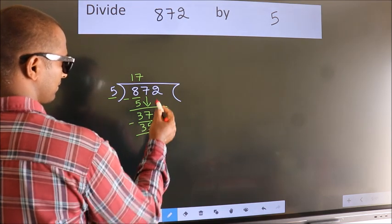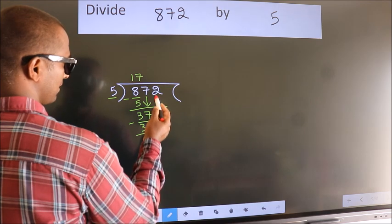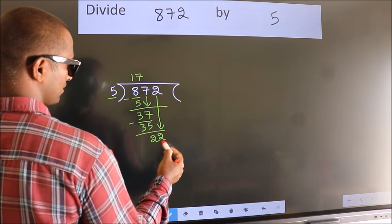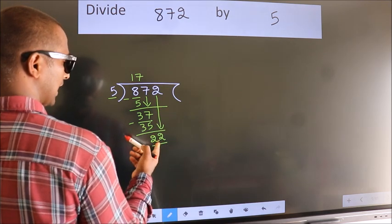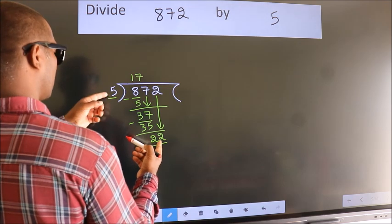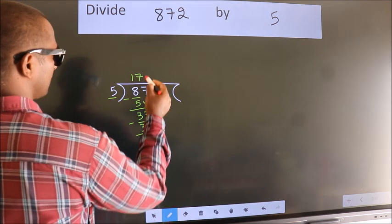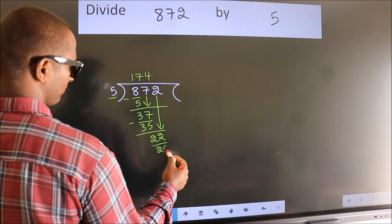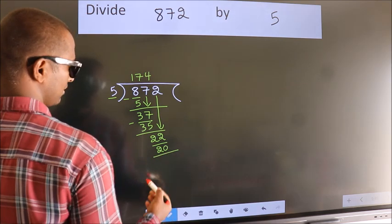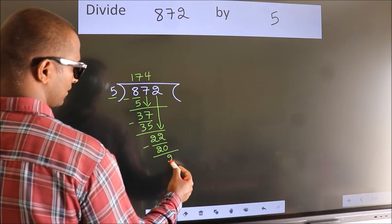After this, bring down the beside number. So, 2 down, giving us 22. A number close to 22 in the 5 table is 5 fours, which is 20. Now we subtract. We get 2.